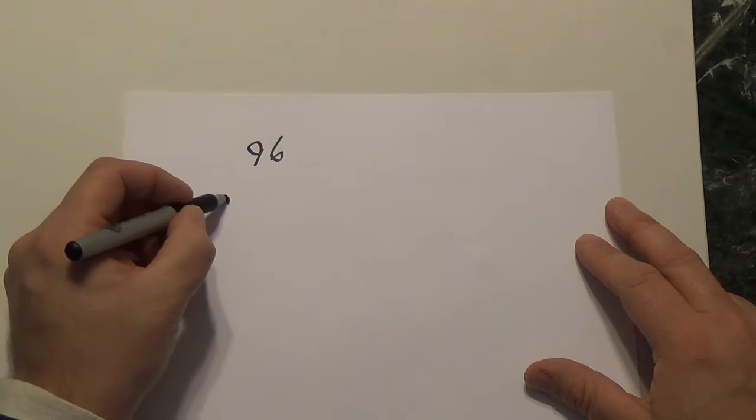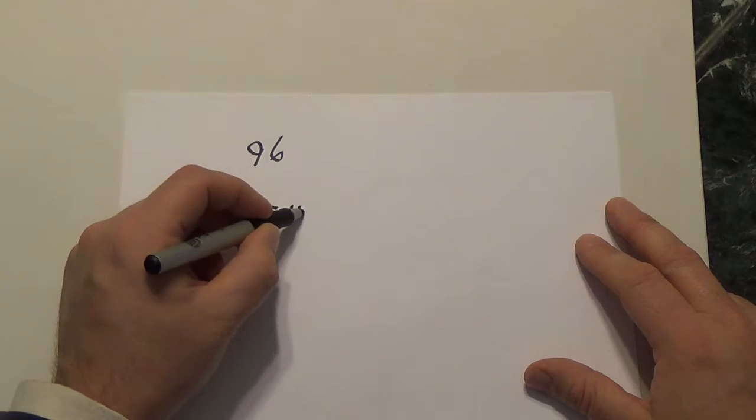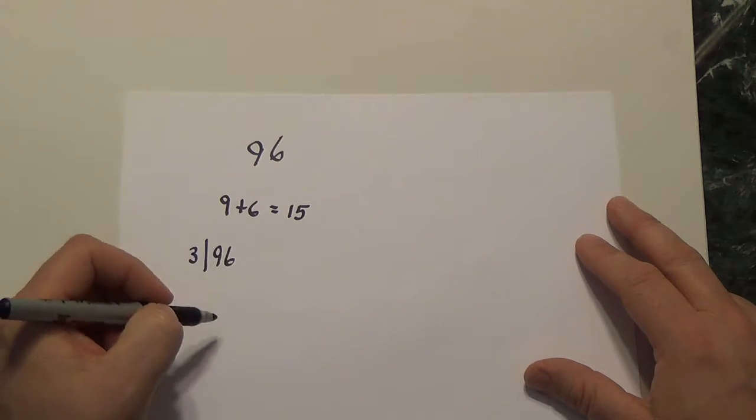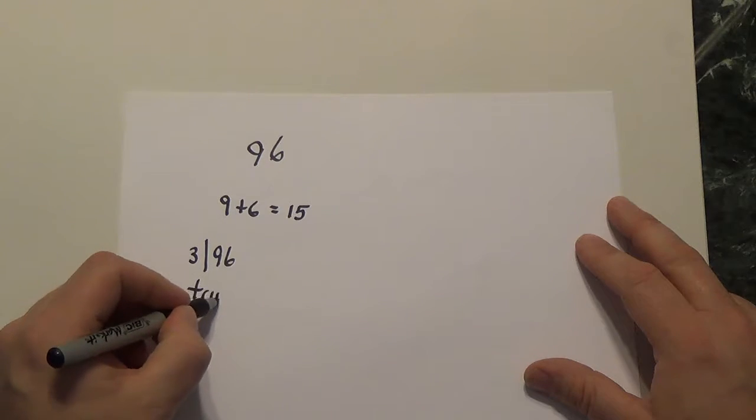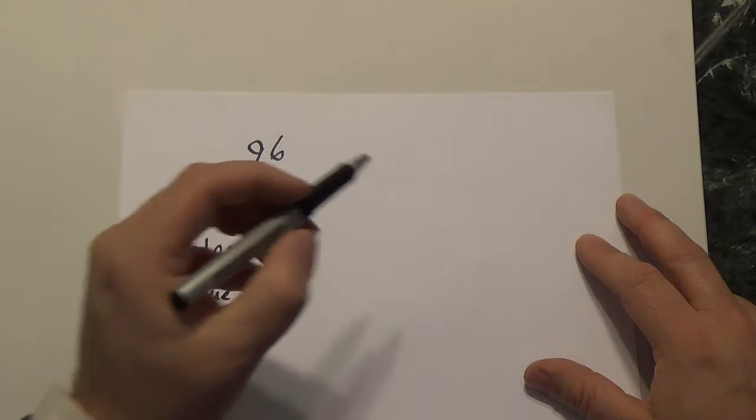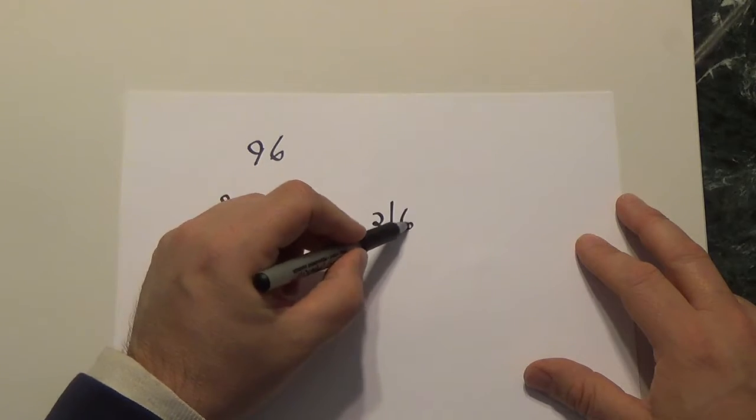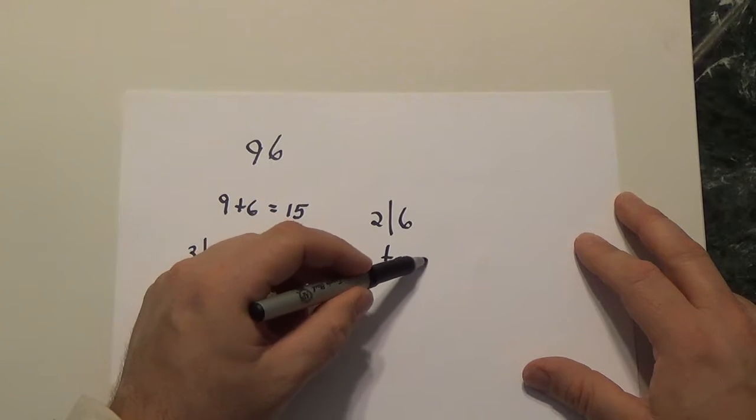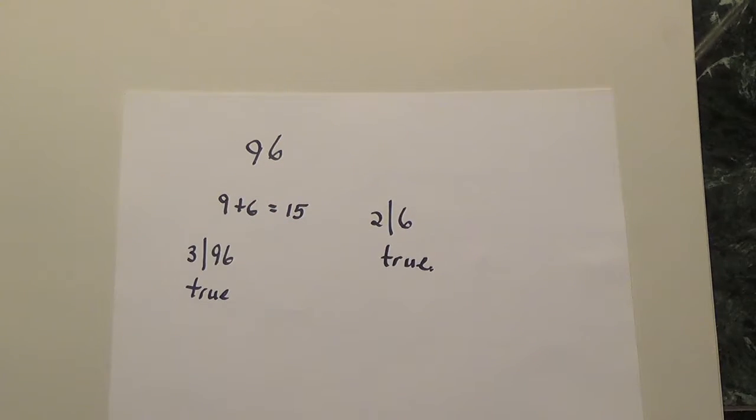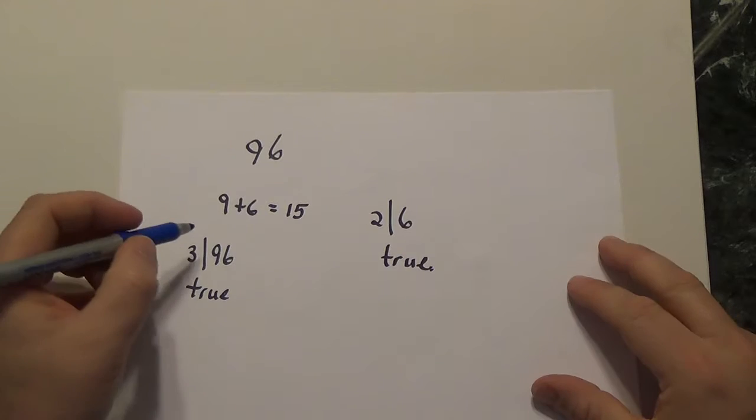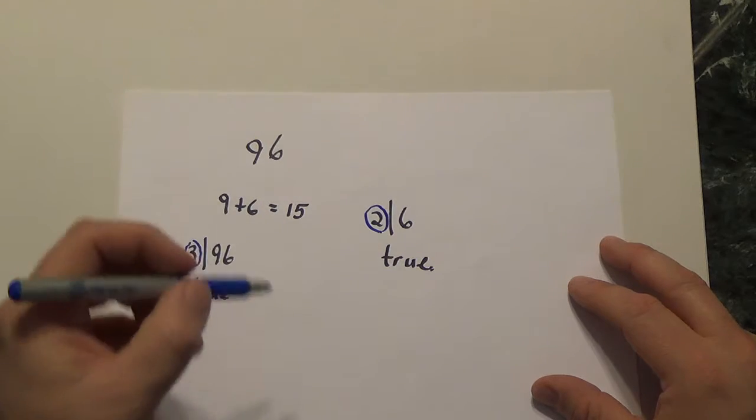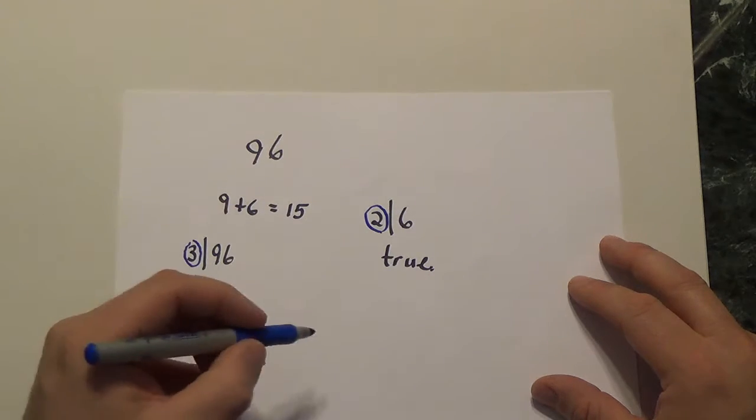The reason is the following. I know that 9 plus 6 is 15, and that means that 3 divides 96 is a true statement. Likewise, I know that 2 divides 96 because 6 is an even number. From those two simple facts, I make a new fact that's really kind of extraordinary. I can multiply the 3 and the 2 together, and I can claim that 2 times 3 is 6.